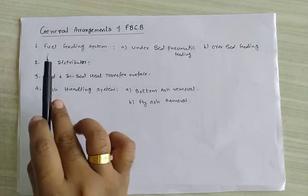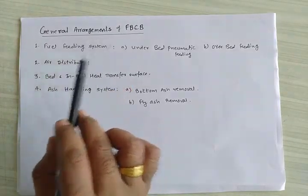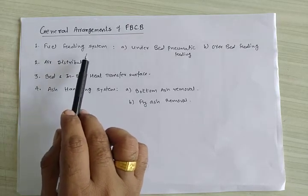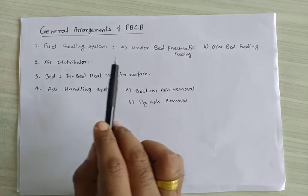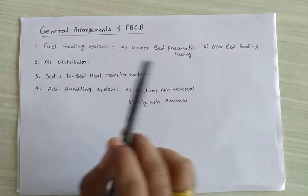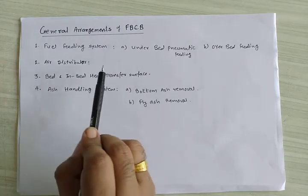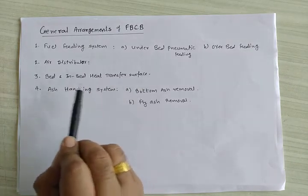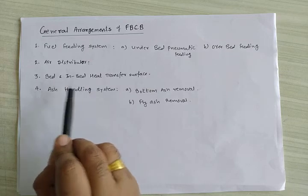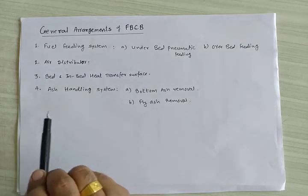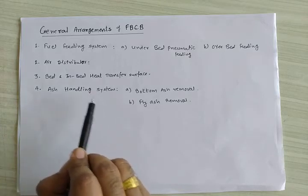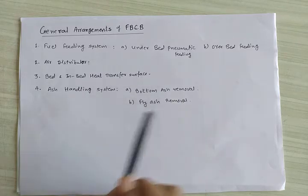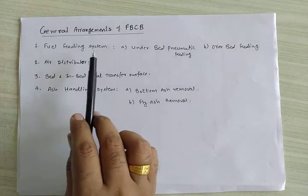Now we concentrate on the general arrangements of the FBC boiler. It consists of the following systems: first, a fuel feeding system; second, an air distributor system; third, a bed heat transfer system with two subsystems — bed heat transfer and in-bed heat transfer; and fourth, an ash handling system, divided into bottom ash removal and fly ash removal.